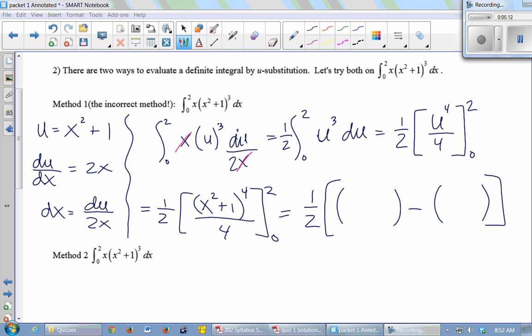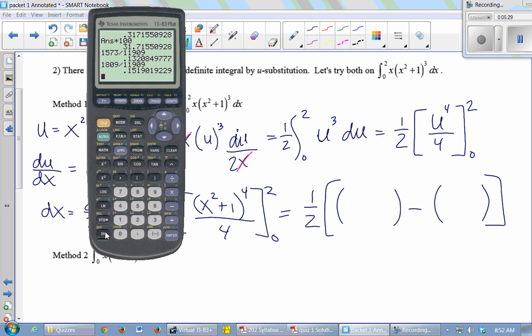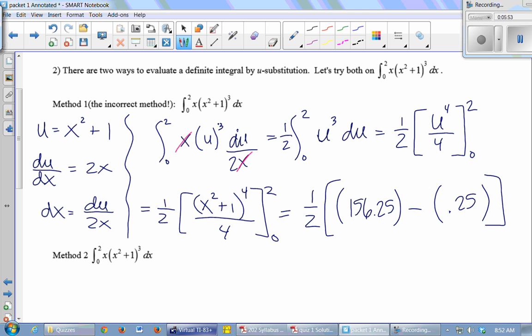So when I plug in 2, 2² is 4, plus 1 is 5, 5⁴ is 625, 625 over 4. I need a calculator. And then when I plug in 0, I'm going to get 1⁴ is 1, over 4 is 1/4. So this finally comes out to 156 times 1/2 is 78.